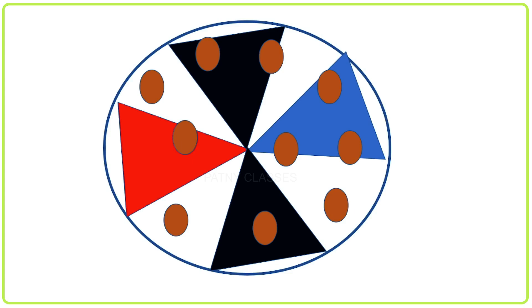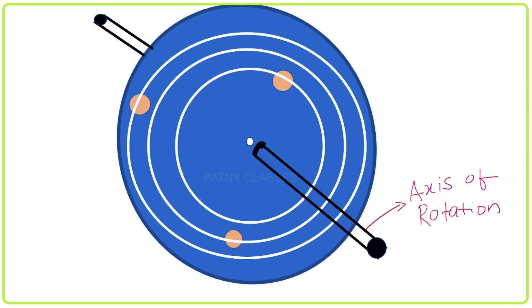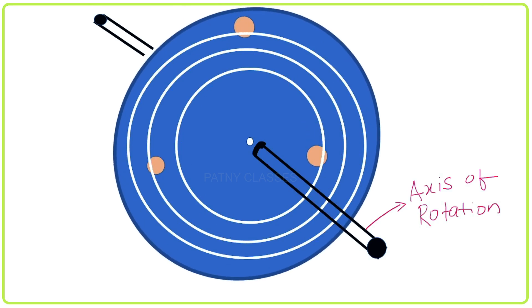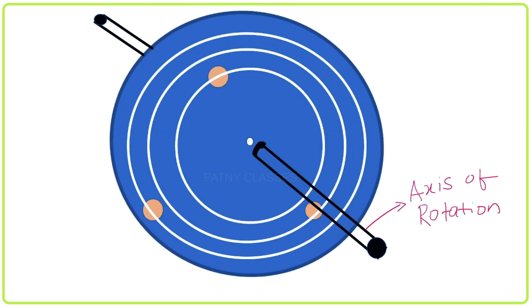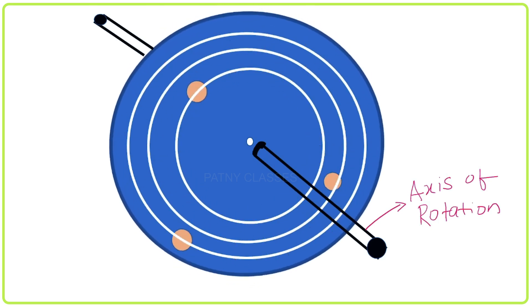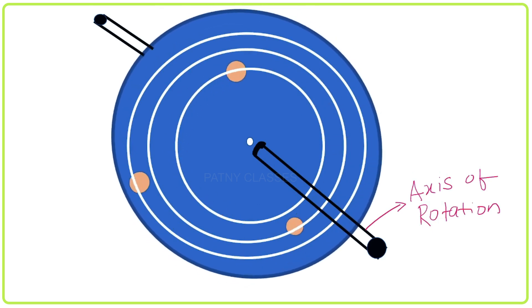The different particles present on the wheel perform circular motion. Even though the wheel is performing rotational motion, the different particles present on the wheel perform circular motion. The radii of different particles varies from point to point.